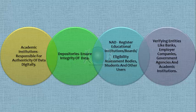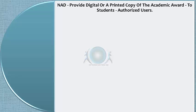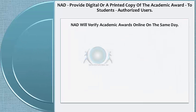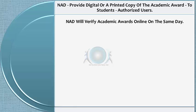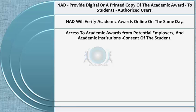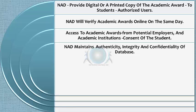National Academic Depository will provide digital or printed copies of academic awards with security features to students or other authorized users. The depository will verify academic awards online on the same day of requests initiated by the authorized user. Access to academic awards, for example from potential employers and academic institutions, shall be only on the basis of the consent of the student. The National Academic Depository also maintains authenticity, integrity, and confidentiality of its database.